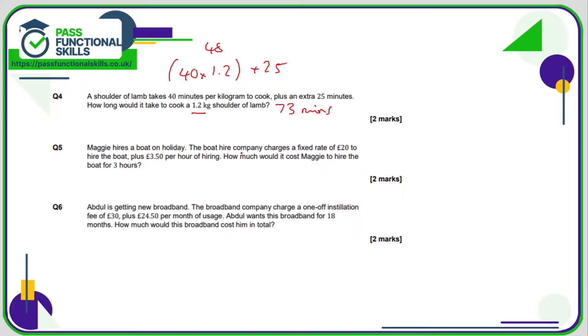Number 5. The hire company charges this one-off fee of 20 plus £3.50 per hour. So if Maggie is going for 3 hours, it's going to be 20 plus 3 lots of £3.50. 3 times £3.50 is £10.50, so £10.50 plus the 20 is going to be £30.50p.